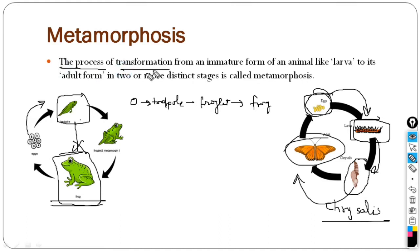The process of transformation from an immature form of animal like larva to its adult form in two or more distinct stages is called metamorphosis.